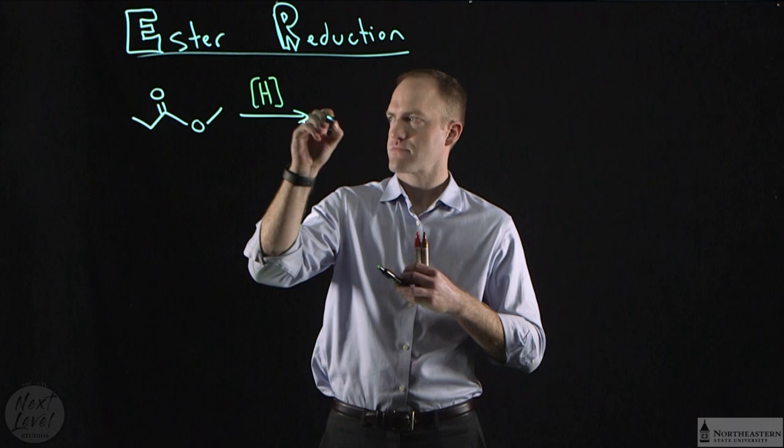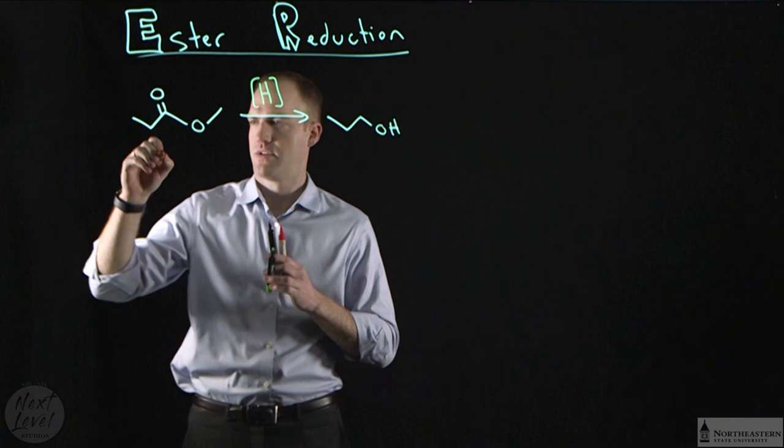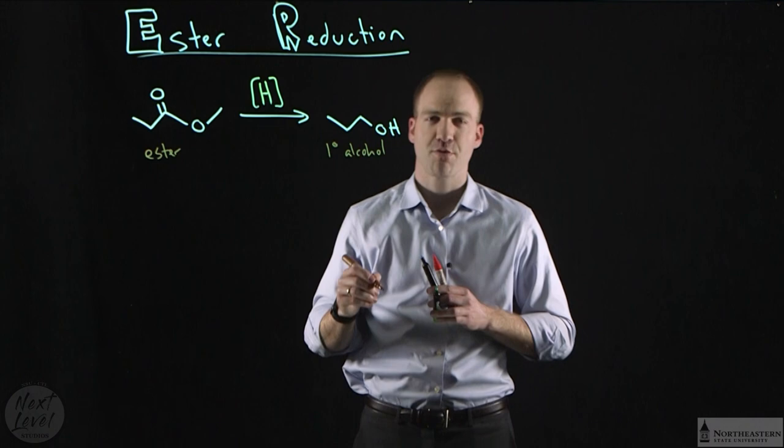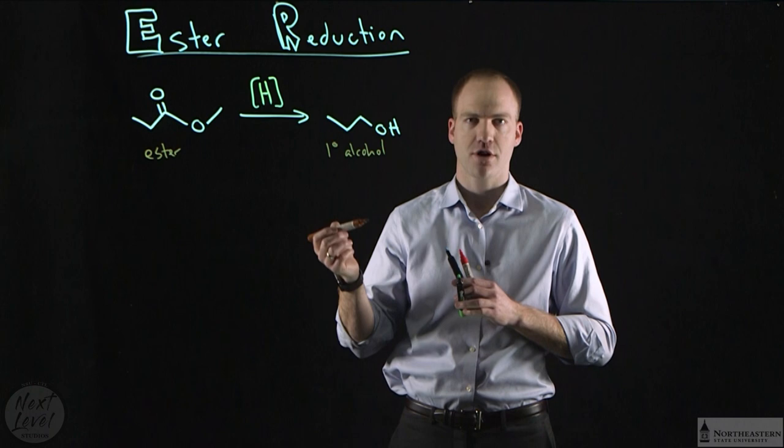What that's going to do is turn our ester into a primary alcohol. Remember we refer to this as a primary alcohol because the carbon containing the OH has only one other carbon attached to it. Let's look at how this mechanism works.